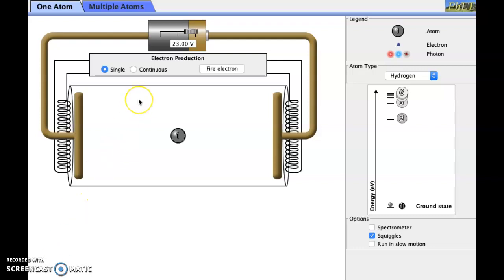Here we have the simulation that you are working with in lab, so set it to continuous. We'll crank up electron production a little bit here. So this setup is similar to our classical discussion of the photoelectric effect.